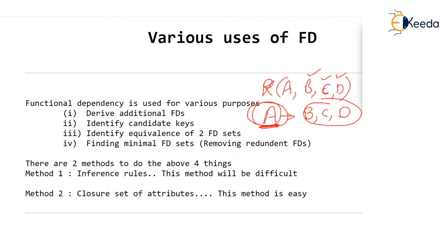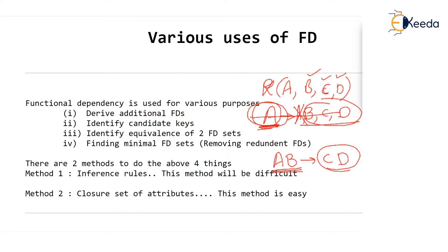An attribute which can determine all other attributes — including itself, but that's trivial — is known as the candidate key. Many times it might happen that A and B together determine C and D. That means A and B can determine all other attributes, C and D. In that case, A and B will be the candidate key. More on this use later.